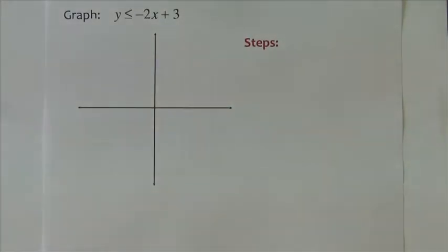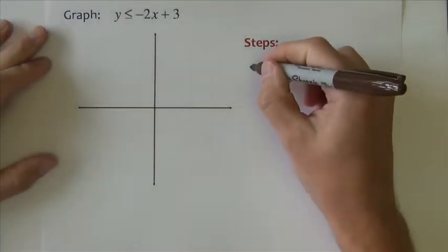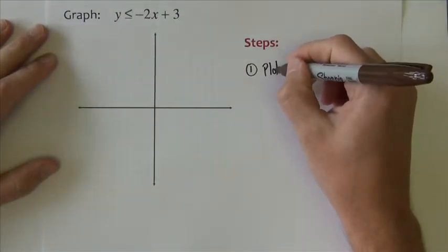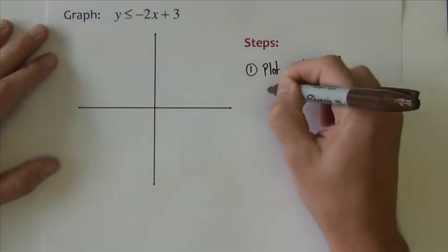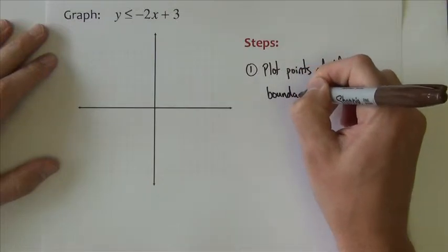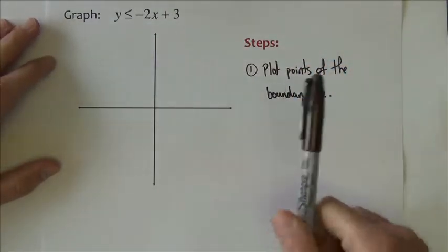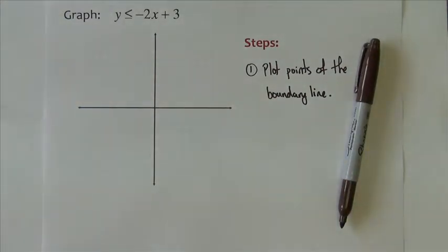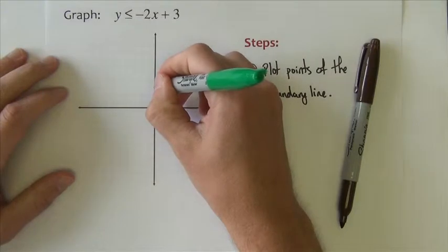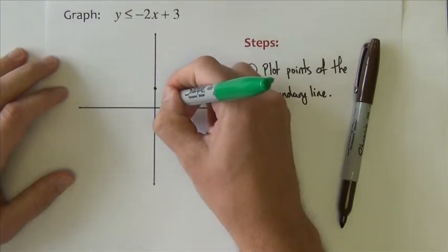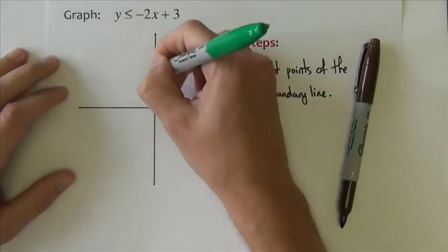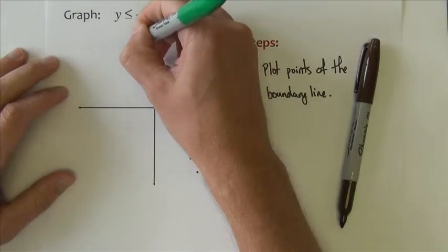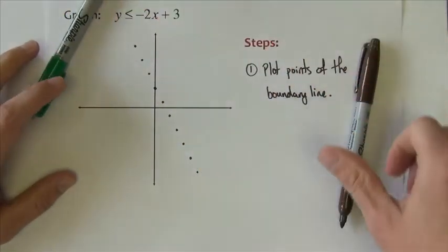The first example we're asked to graph is y is less than or equal to negative 2x plus 3. The first thing you're going to do is plot points of the boundary line. That means just plot the points that would make up the line. This negative 2x plus 3 starts at 3 on the y-axis, slopes down to right 1, could also go up 2 and to the left 1. That's the first step, just plot out those points.